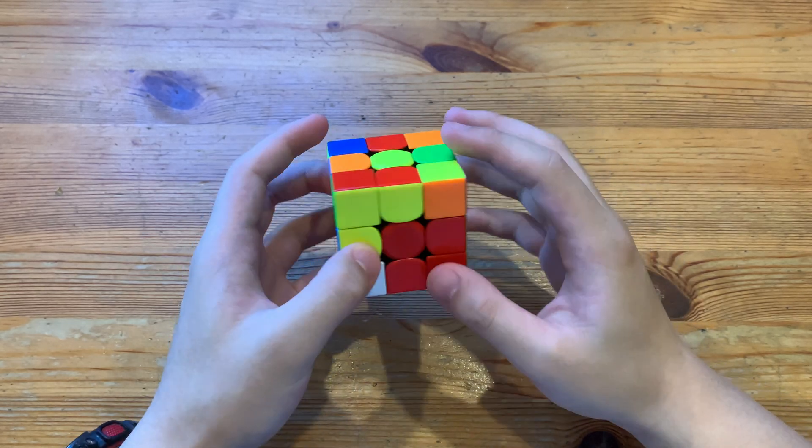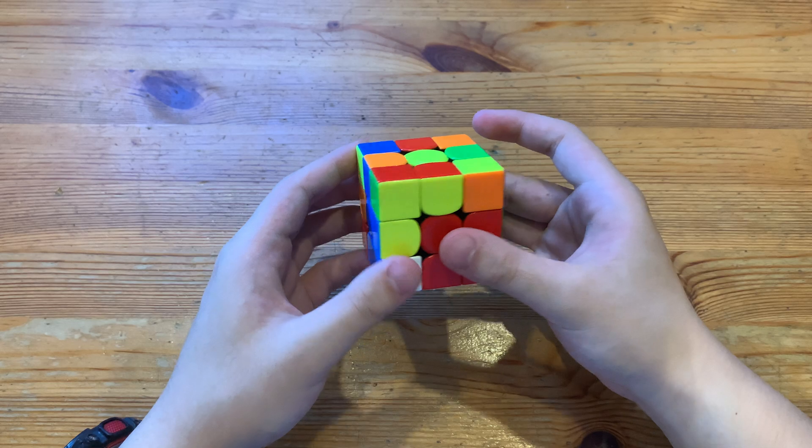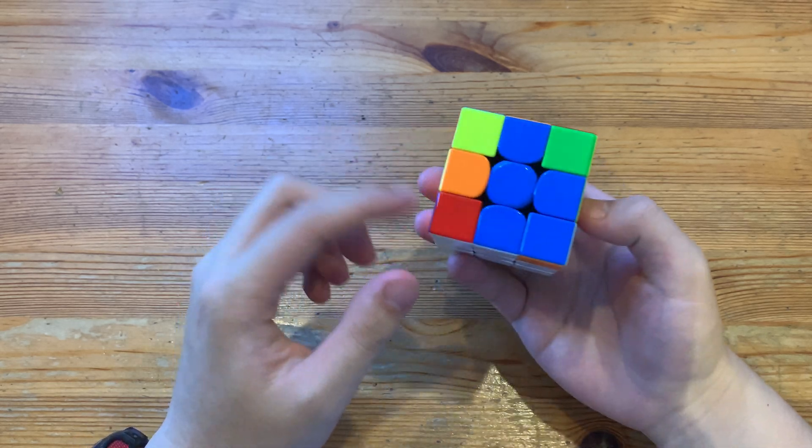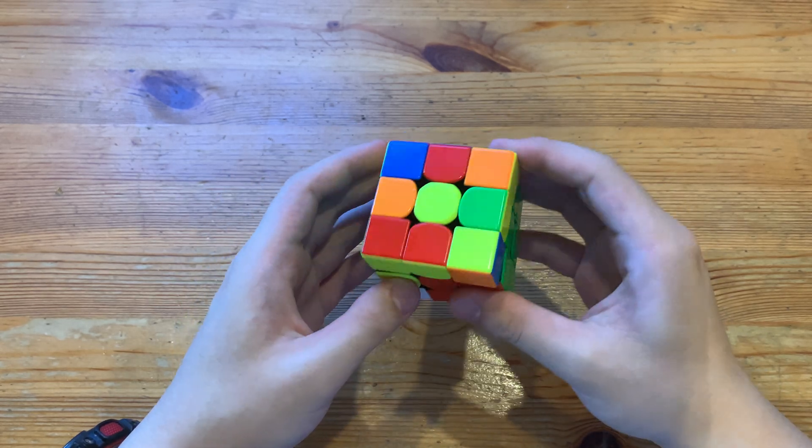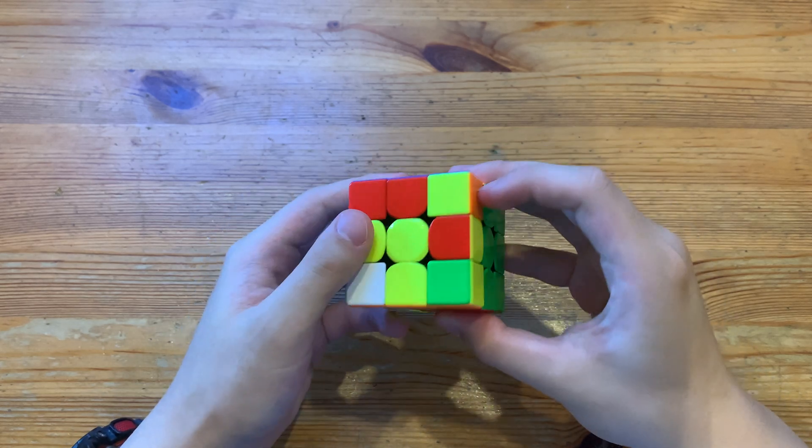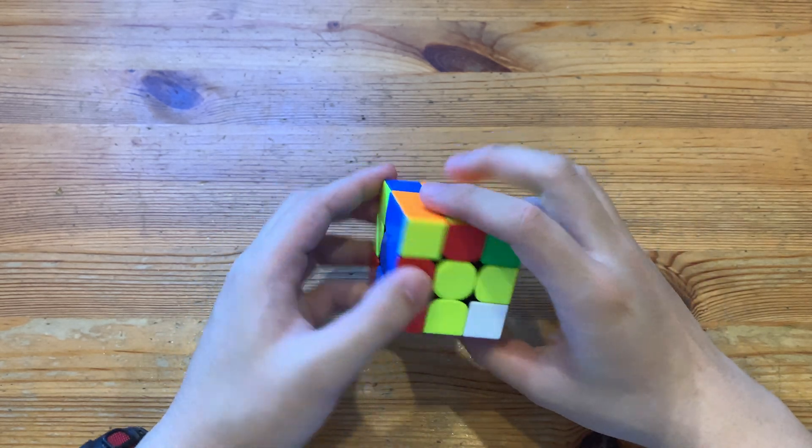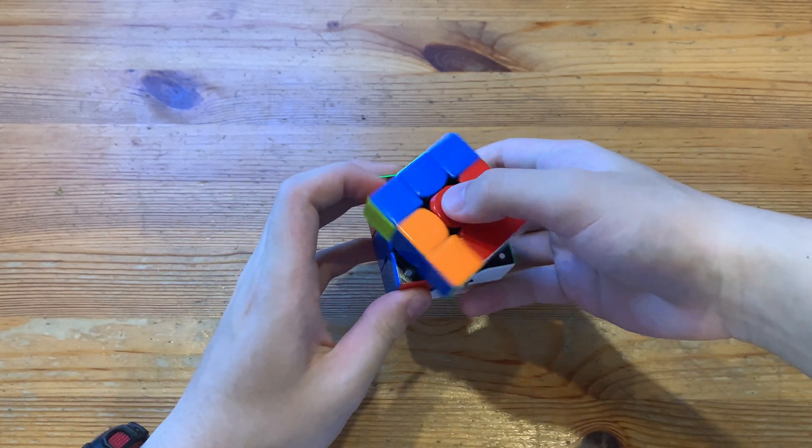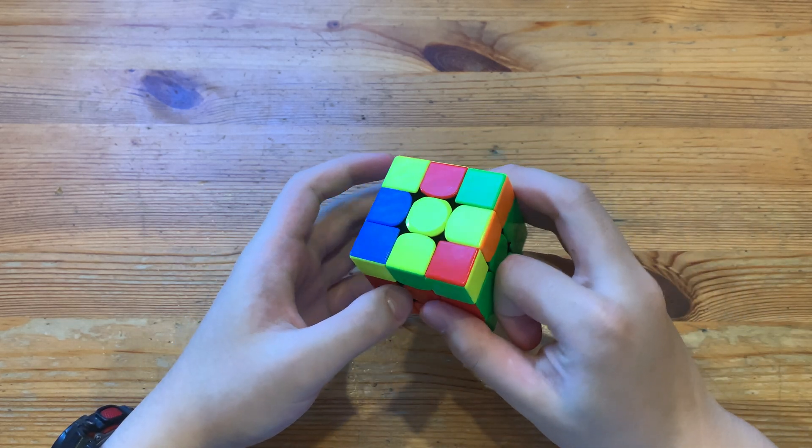And here, to solve this pair, I'll probably just do this solution. So these two, I'll probably just do this. And then here, I can just cancel into the back, right pair, and I'll use this solution, like that.